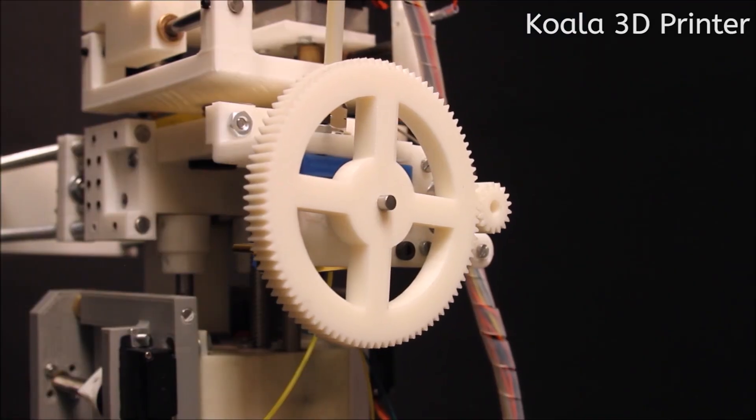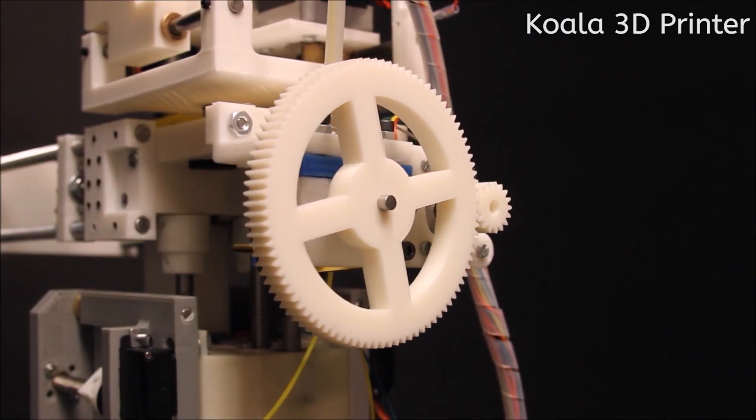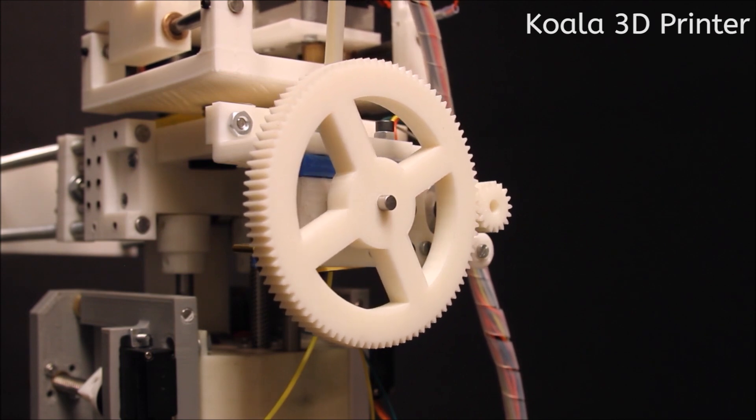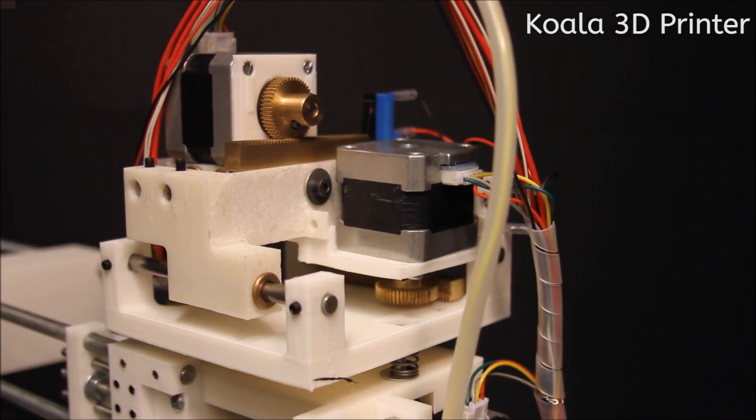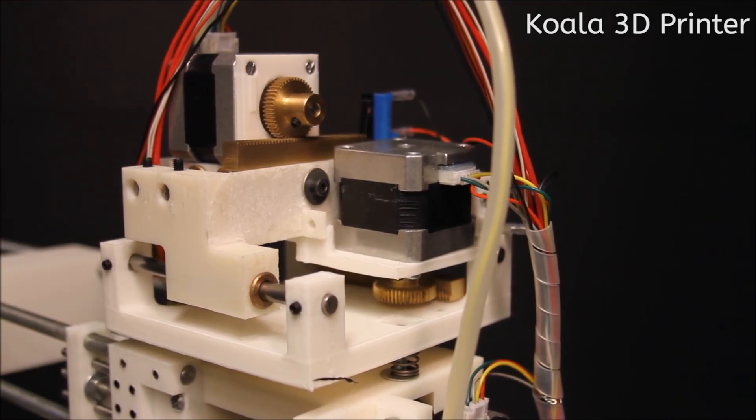The machine is capable of printing a vertical structure while simultaneously climbing the same structure. This yields an infinite manufacturing capacity as the volume of the printed structure is unlimited, while the size of the machine remains constant.